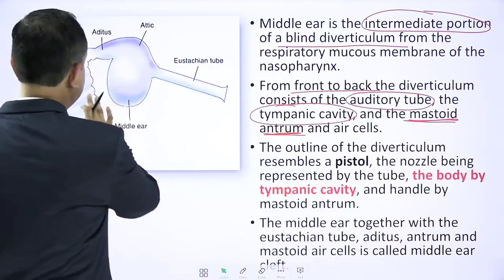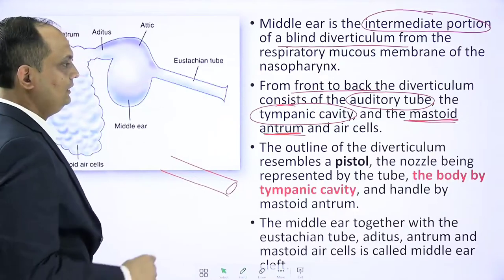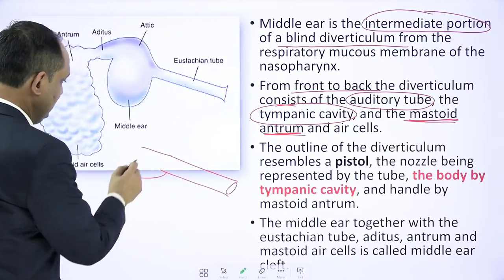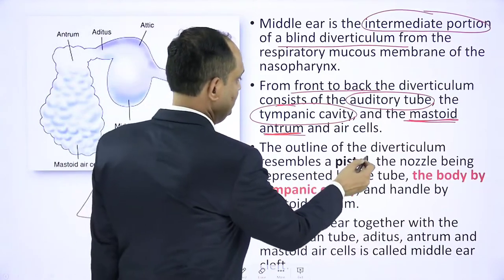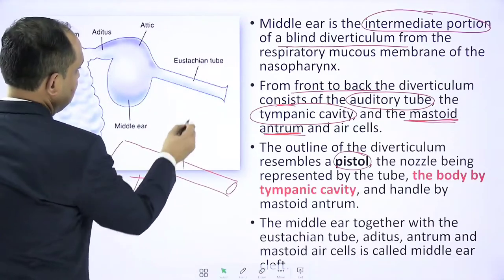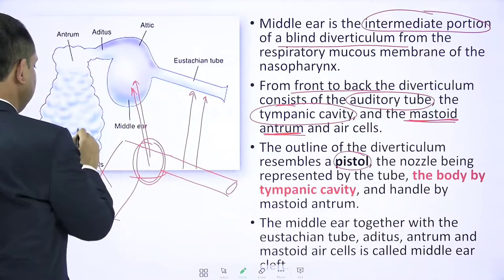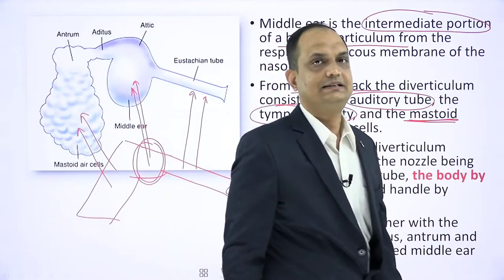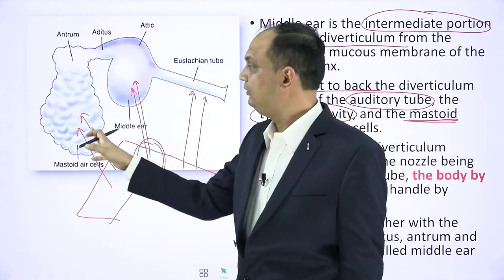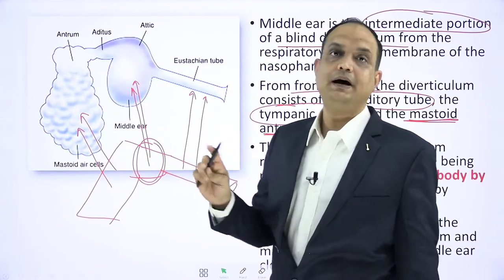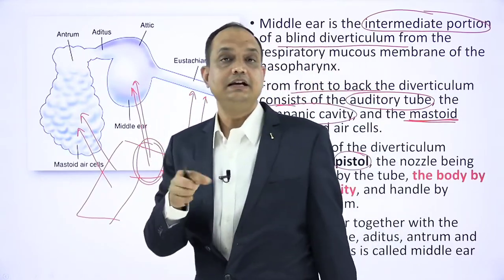When you see these three parts, they resemble a pistol. The pistol has a nozzle, a body, and a handle. The outline of the diverticulum resembles a pistol: the nozzle is represented by the Eustachian tube, the body is represented by the middle ear cavity, and the handle is represented by the mastoid antrum. So this nasopharyngeal diverticulum forms the mucosal lining not only of the middle ear cavity, but also lines the Eustachian tube and the mastoid antrum.